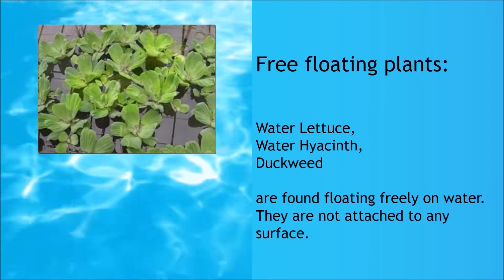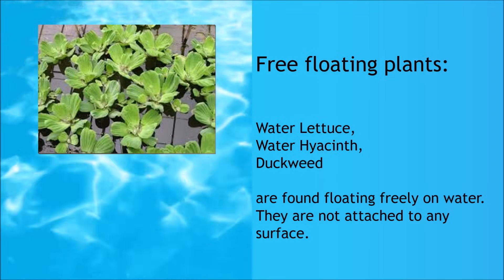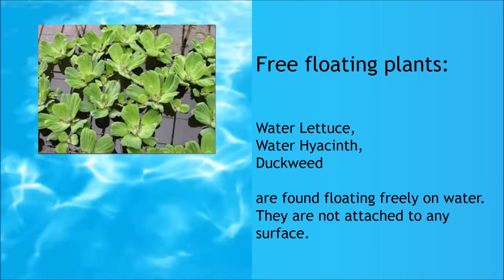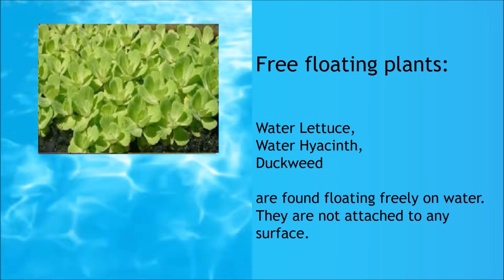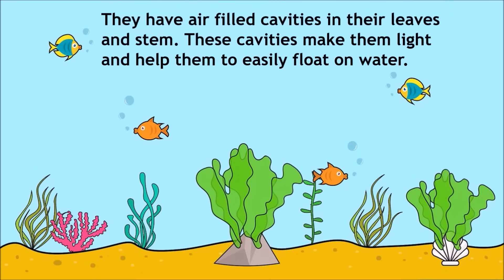Free floating plants are not attached to any surface. They have air-filled cavities in their leaves and stems. These cavities make them light and help them to easily float on water.